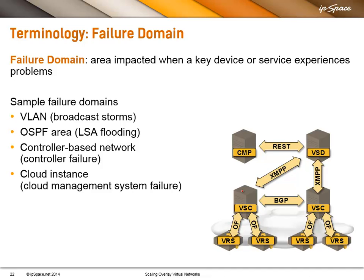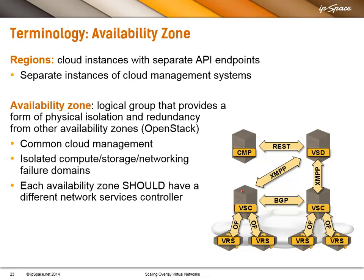Controller-based networks: if you are relying on your controller for end-to-end connectivity and the controller fails, obviously the whole network is down. And finally, an instance of a cloud management system is also a single failure domain. That's why almost all big cloud providers use a hierarchy of failure domains.